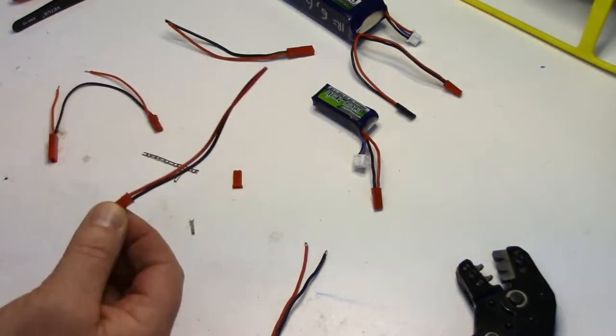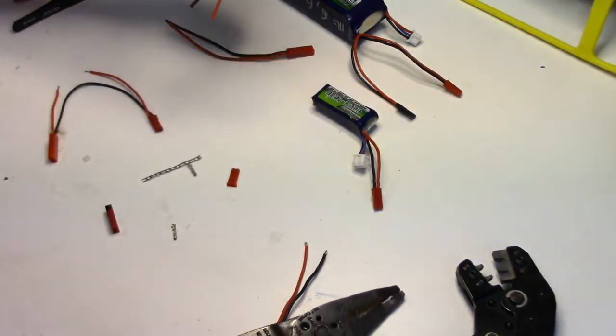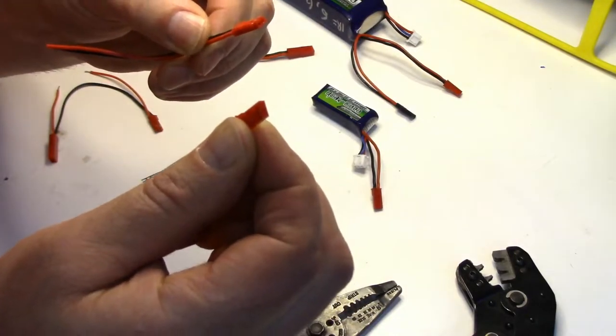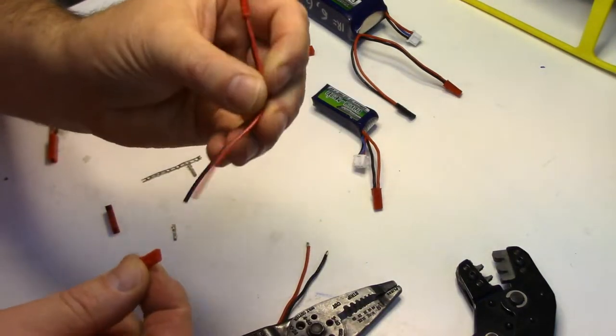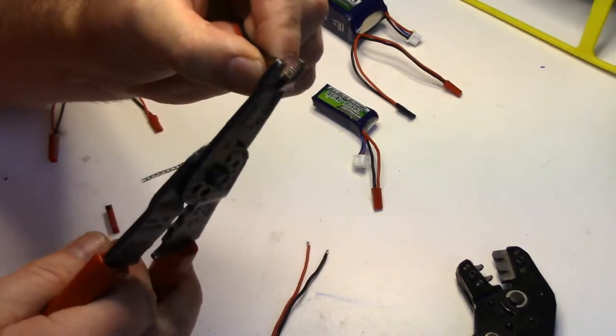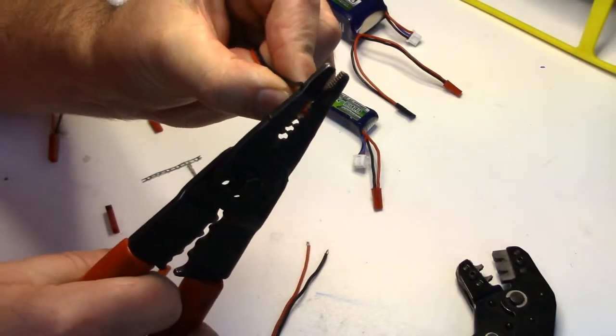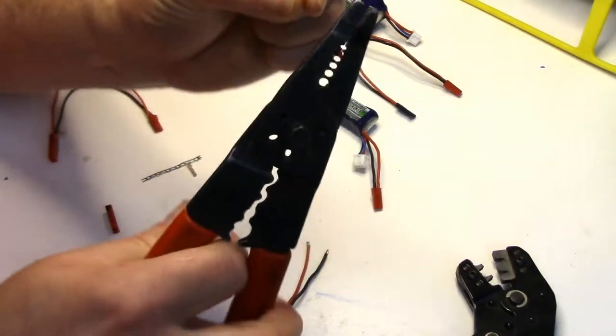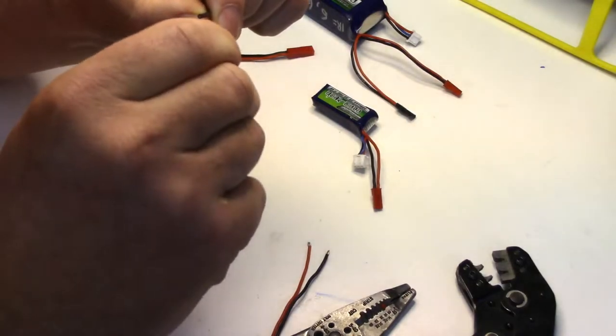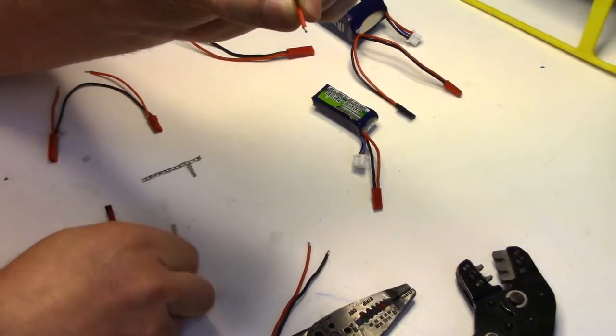To do these it's pretty simple. I'm going to put another male end on to this pigtail that's already got a male and we'll just put it on the other side. So the first thing you got to do is strip a little bit of wiring off, basically about three millimeters or so.